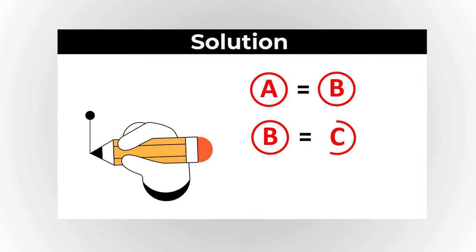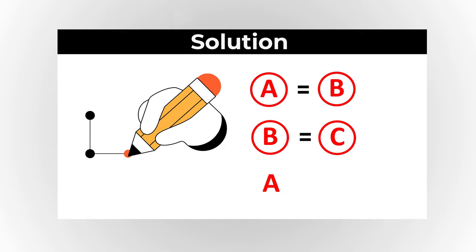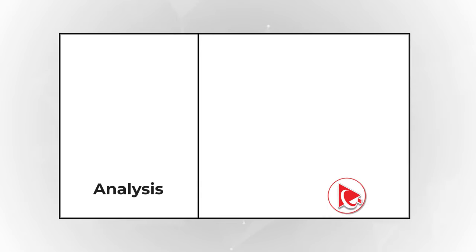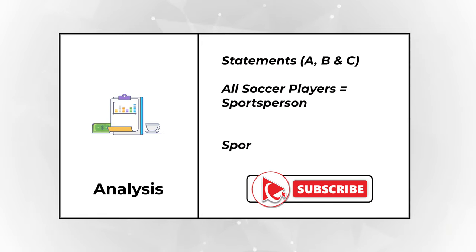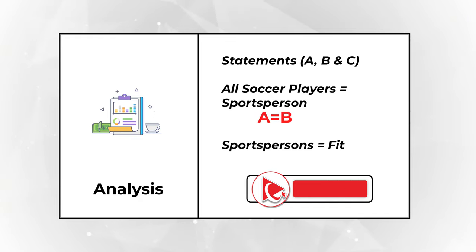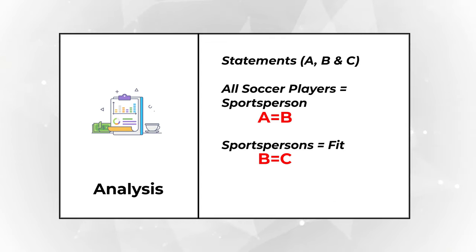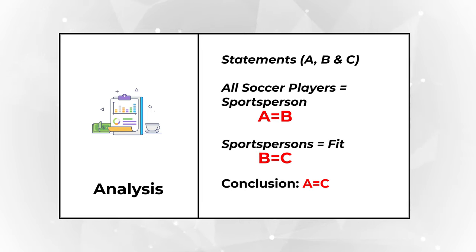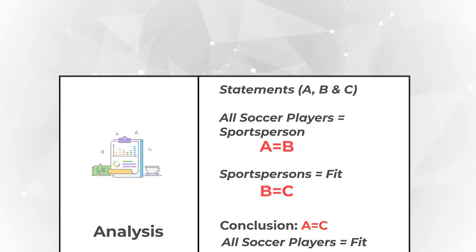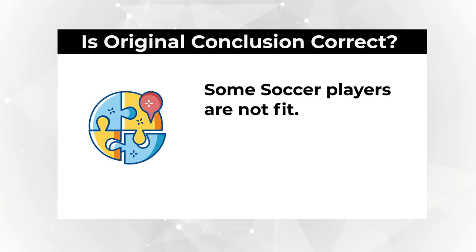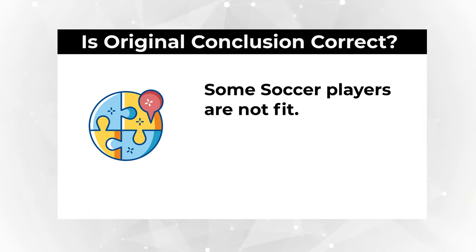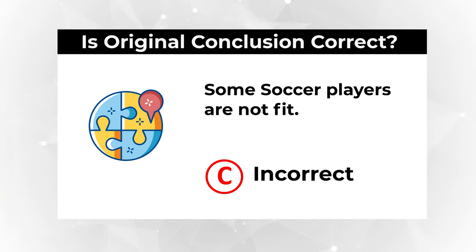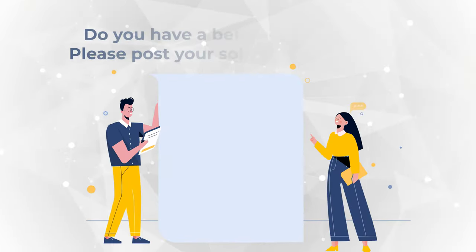In logical reasoning, the formula is: if A equals B and B equals C, then A equals C. The statement 'all soccer players are sports persons' is A equals B, and 'all sports persons are fit' is B equals C. Therefore A equals C, meaning all soccer players are fit. Our question asks if some soccer players are not fit — based on the information provided, that is not correct. So the correct choice is Choice C: incorrect. Because the correct conclusion based on the information is that all soccer players are fit.